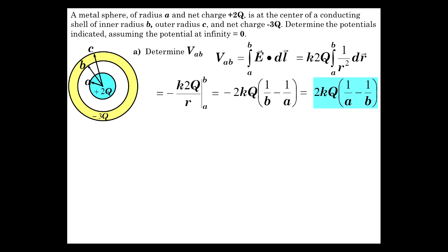And there's our answer: 2kQ times 1 over a minus 1 over b. Now what's V_bc? Well, you should know that the difference in potential across b and c, as opposed to just the potential at b or at c, is asking a different thing.